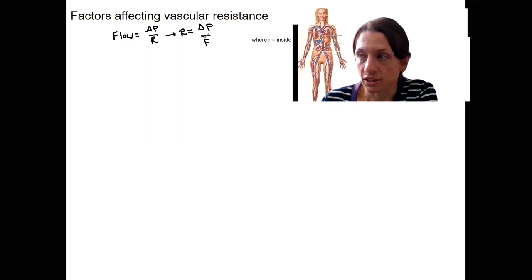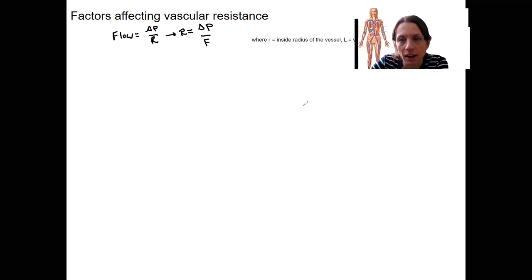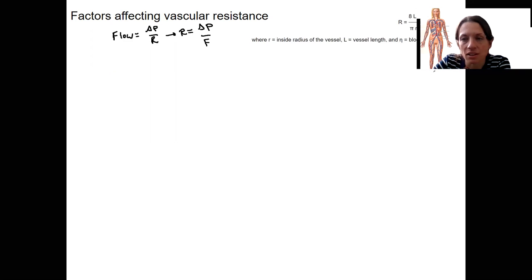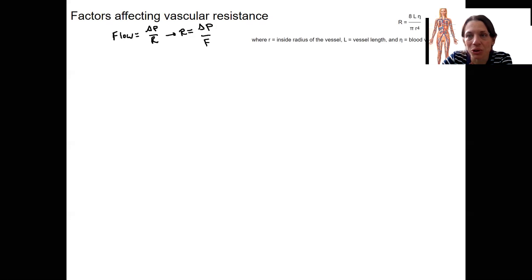So that's solving for resistance. A similar equation to this, I'm going to show you. You do not need to memorize this, but it can help to make sense of the factors that affect resistance. This is another equation for resistance. R is resistance. So this is going to be a way that we can look at the factors that affect resistance. They're right here. Radius, length of the vessel, and blood viscosity.